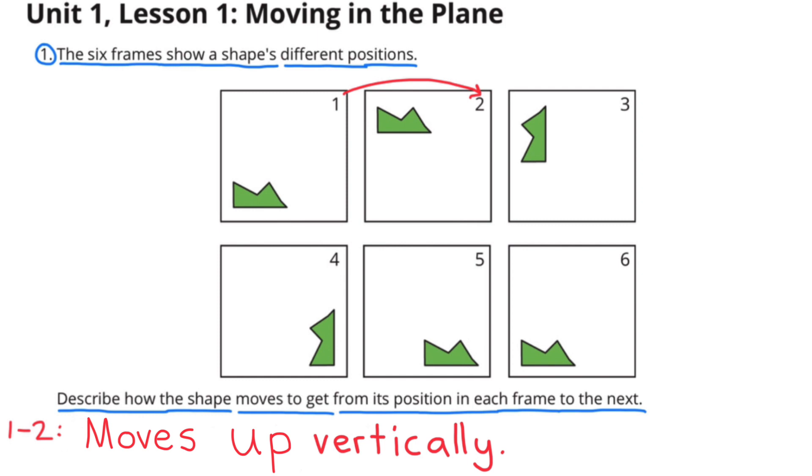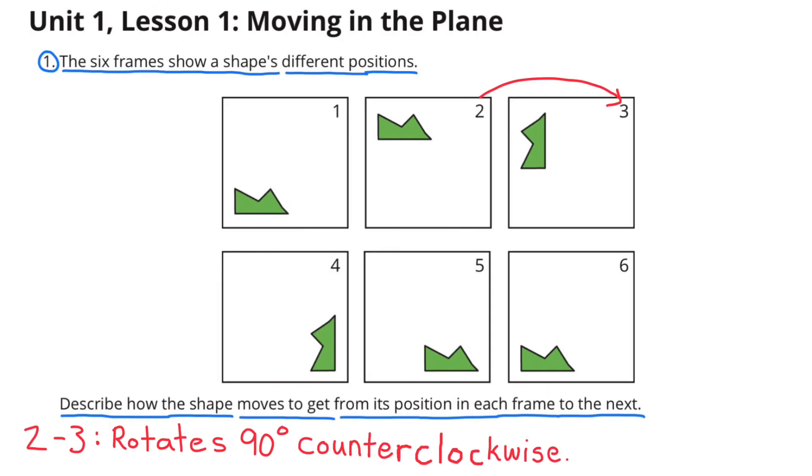From frame 1 to frame 2, the shape moves up vertically. From frame 2 to frame 3, the shape rotates 90 degrees counterclockwise.